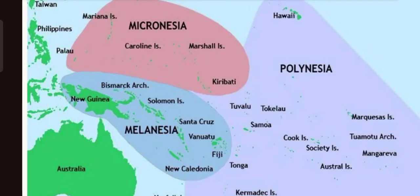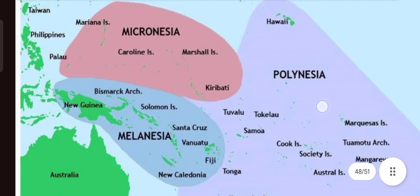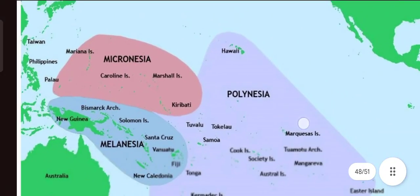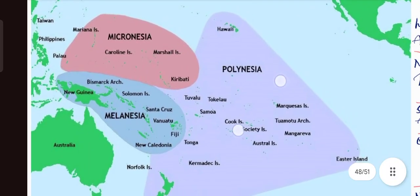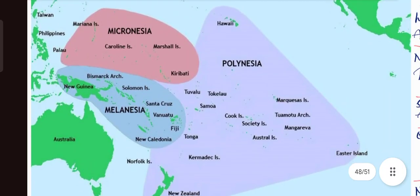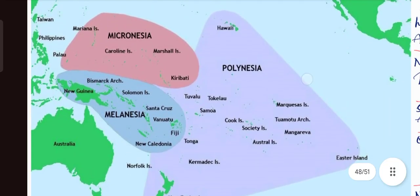Now let us talk about the Oceania islands. There are three kinds of classification given. As you can see in the map, one is Polynesia, one is Micronesia, and one is Melanesia.